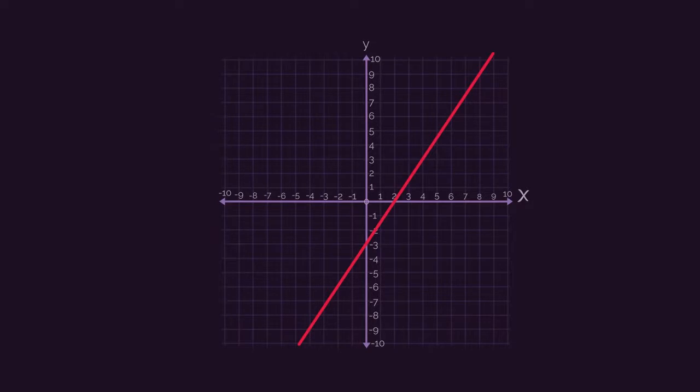Right, so for finding the gradient, we take any two points on the line, but make sure they have to be exact coordinates. So, these ones are good: 0, 3 and 4, 3.